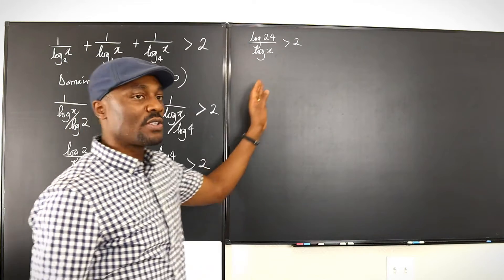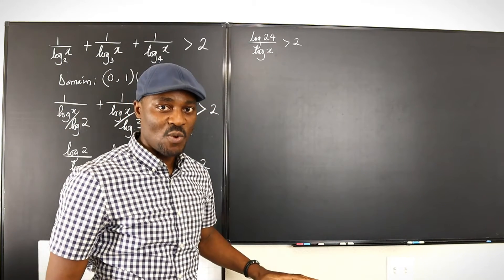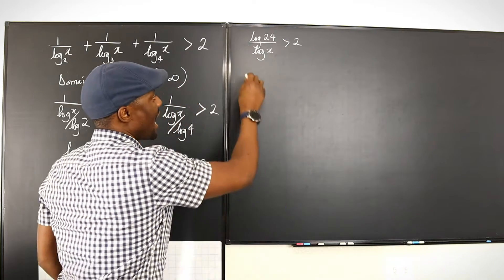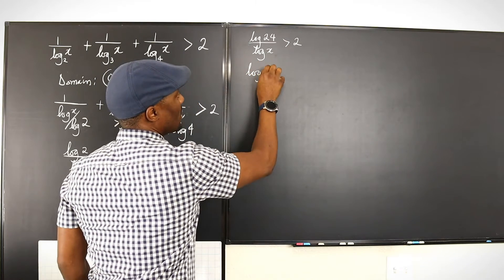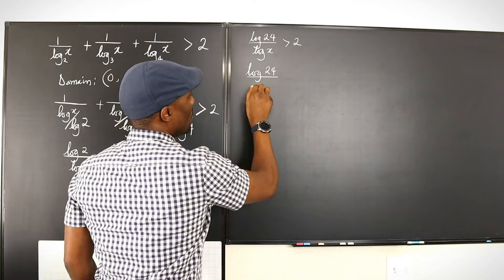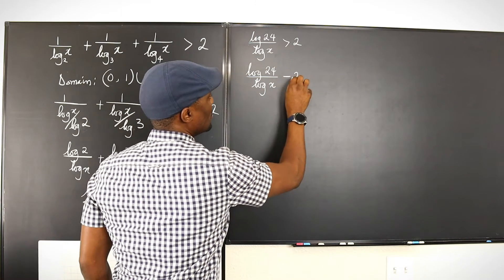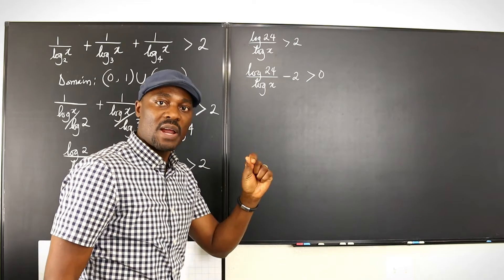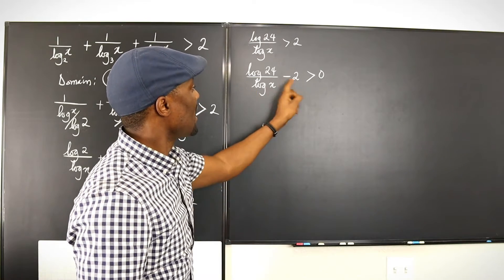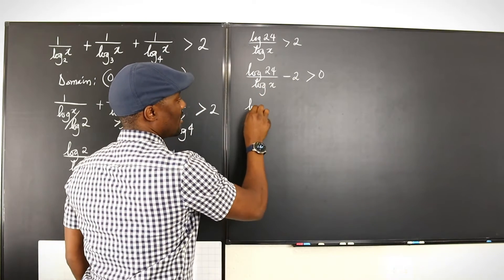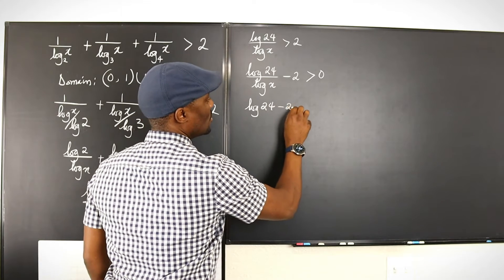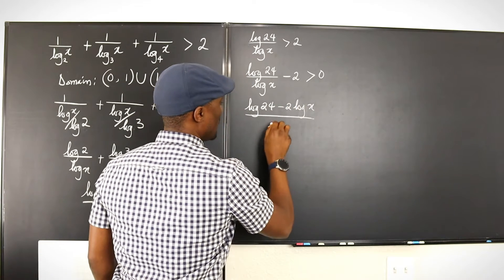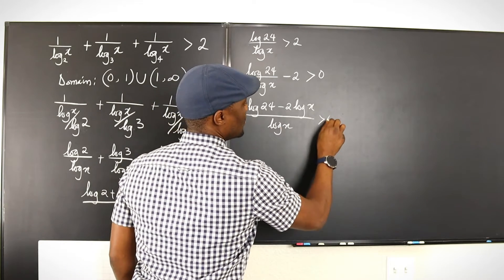So we might as well write this as log 24 over log x is greater than two. Remember, we don't cross multiply when we're dealing with inequalities. What you want to do is move this here and have log 24 over log x minus two is greater than zero. Let's make this one single rational expression. If you take the LCM, you'll end up with log 24 minus 2 log x over log x is greater than zero.